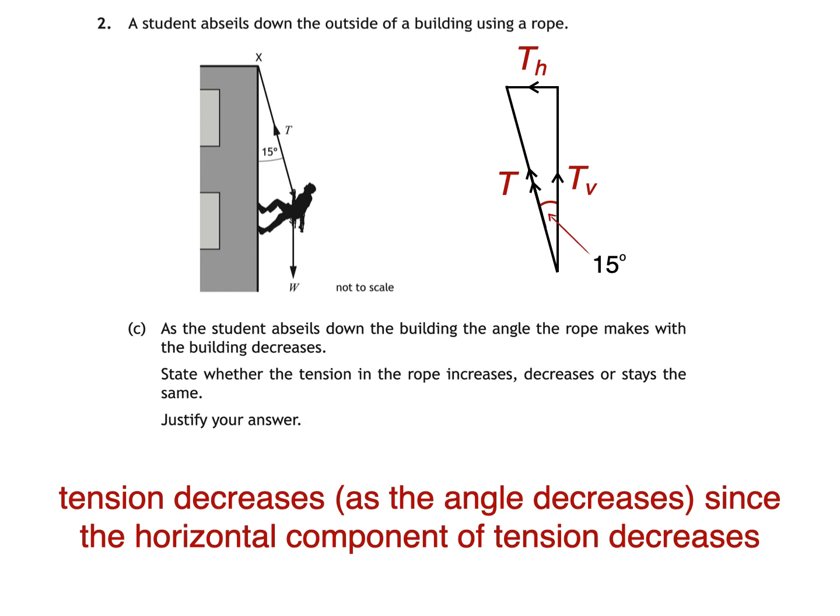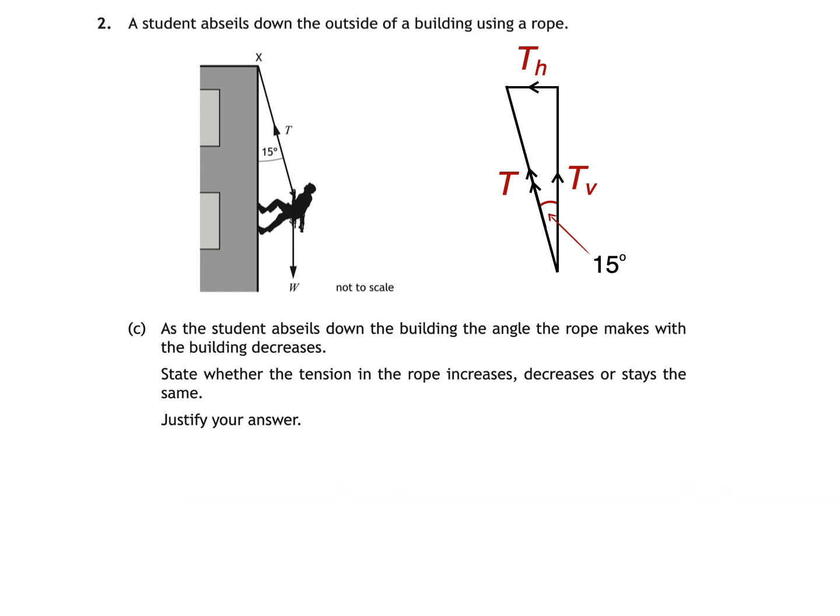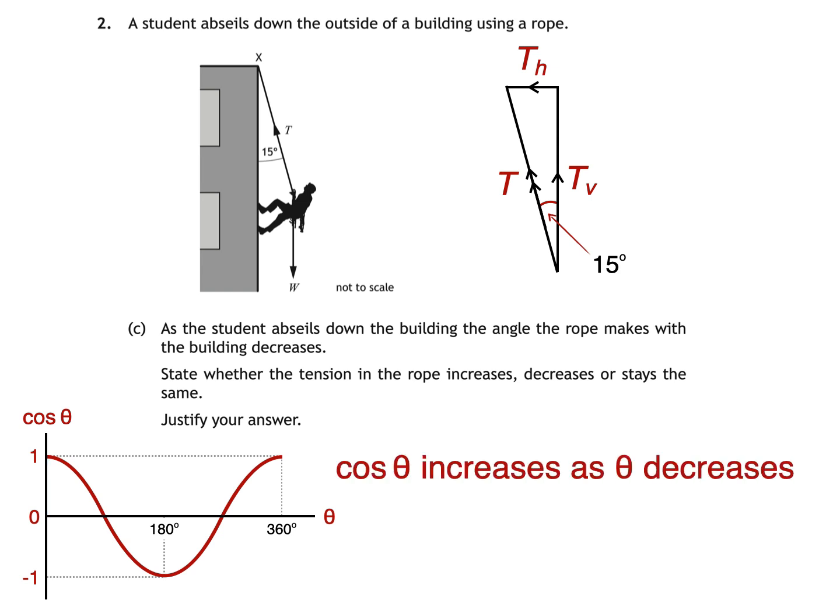Here's another way of answering the same question. You should be familiar with this graph of cos θ against angle θ from your maths lessons. As angle θ increases from 0 to 90 degrees, you can see that cos θ is decreasing from a value of 1 down to 0. As θ decreases from 90 to 0 degrees, cos θ increases from 0 up to 1. So remember this: Cos θ increases as θ decreases, which is true for angles between 0 and 90 degrees.